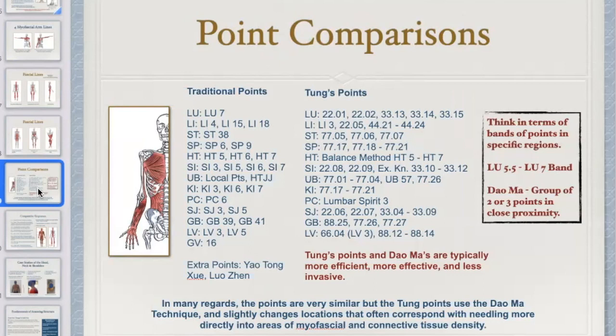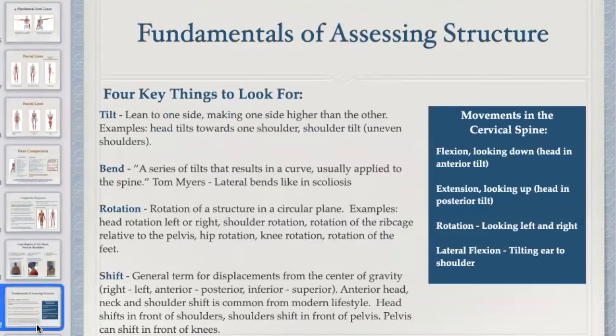If we take this back to the yin-yang dynamic, it gets easier to understand. Let's go back to the four terms. This is related to the principle of working with antagonistic contractions and strains. We've got tilts — one side higher than the other, common in shoulders and head. Watch for that in clinic today. We've got bends — a series of tilts that result in a curve, usually applied to the spine for conditions like scoliosis.